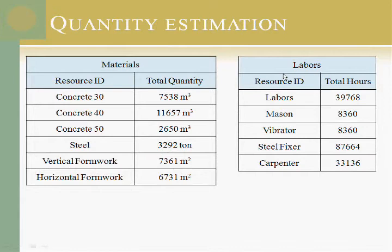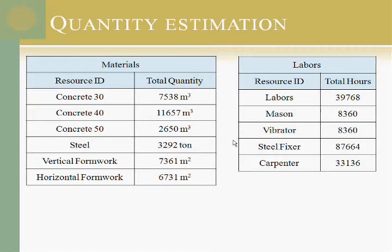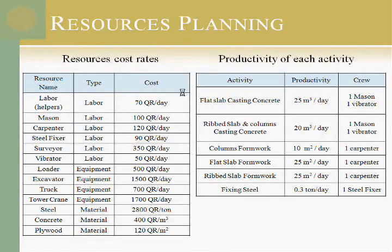For the quantity estimation, we calculated materials including around 7,500 m³ of concrete (C40 and C50), steel, vertical formwork, and horizontal formwork. For labor, we need masons, vibration operators, steel fixers, and carpenters. We only calculated labors and materials related to structural members, not architectural members or mechanical equipment. For resource planning, we assigned cost rates for each labor type and equipment including excavators, trucks, tower cranes, and steel, and we took the productivity of each activity.